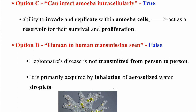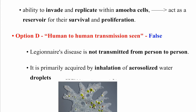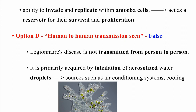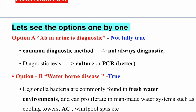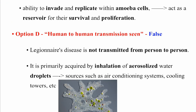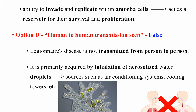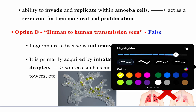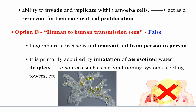Option D — human-to-human transmission is seen: this is false, making it the correct answer. Legionella disease is not transmitted person to person. Transmission is through inhalation of aerosolized water droplets from air-conditioning systems, cooling towers, and similar environments. So to summarize: antibody not always diagnostic; waterborne yes; can infect amoeba as reservoir; no man-to-man transmission ever.